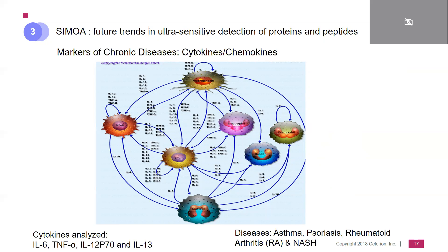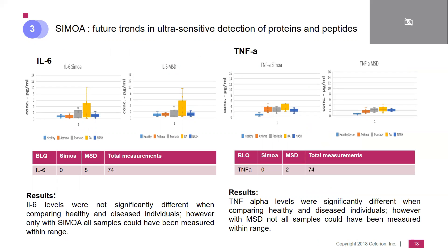We particularly looked into the cytokines IL-6, TNF-alpha, IL-12, and IL-13 in the indications asthma, psoriasis, rheumatoid arthritis, and NASH. For IL-6, we compared CMOA versus mesoscale discovery (MSD). The detection level for both technologies was roughly within the same range, but more importantly, of the 74 samples measured, eight were below range with MSD technology and none with CMOA. For TNF-alpha, TNF-alpha was clearly upregulated in all chronic diseases compared to healthy states, and again of 74 samples, two were below range with MSD and none with CMOA.